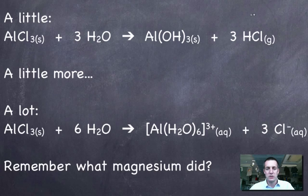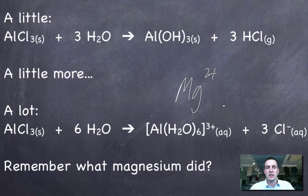If you add quite a lot of water to aluminium chloride, it will dissolve in the water and produce what are called hydrated aluminium ions. This is a complex ion. What you can see here is you've got an aluminium 3+ ion surrounded by six water molecules.